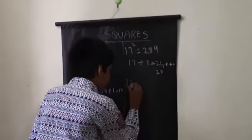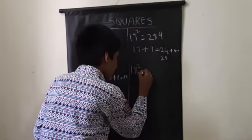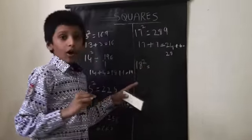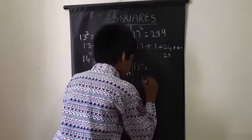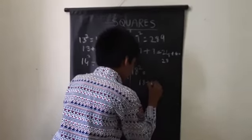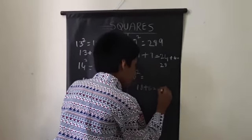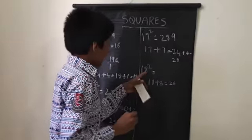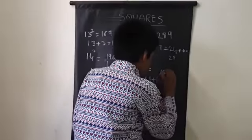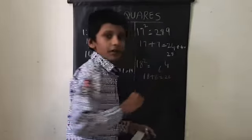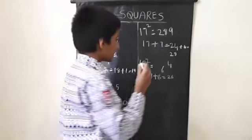Eighteen square. Eighteen, how much more than ten? Eight. Twenty-six. Eight times eight equals sixty-four. Twenty-six plus six equals thirty-two.